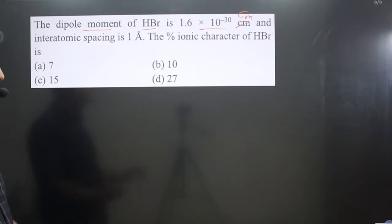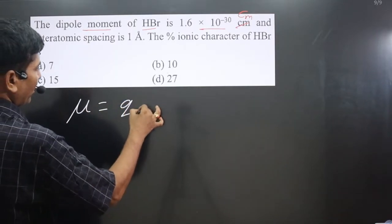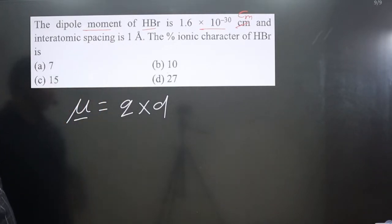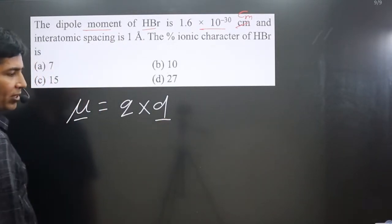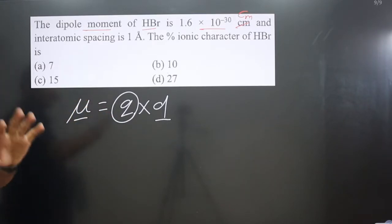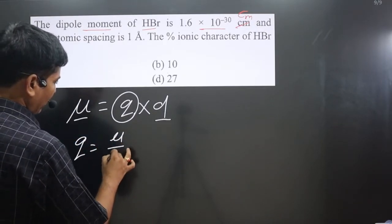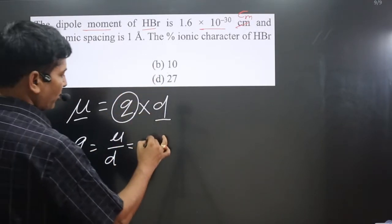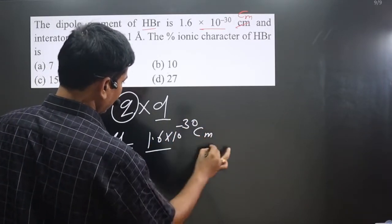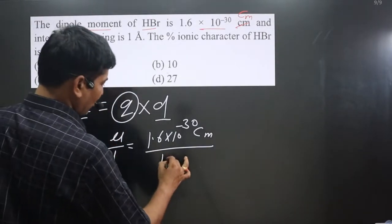First, we apply the dipole moment formula: mu is equal to q multiplied by d, the distance. The dipole moment is given in the question, the distance is also given, so q can be calculated. We have q is equal to dipole moment divided by d. The dipole moment value is 1.6 multiplied by 10 to the power minus 30 coulomb meters, and the interatomic distance is one angstrom.